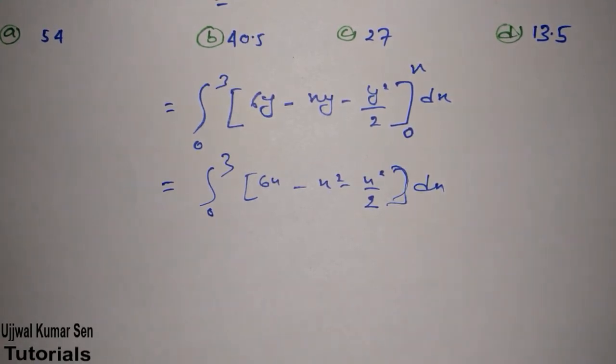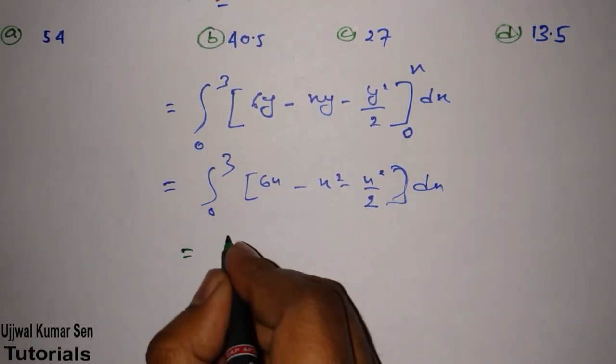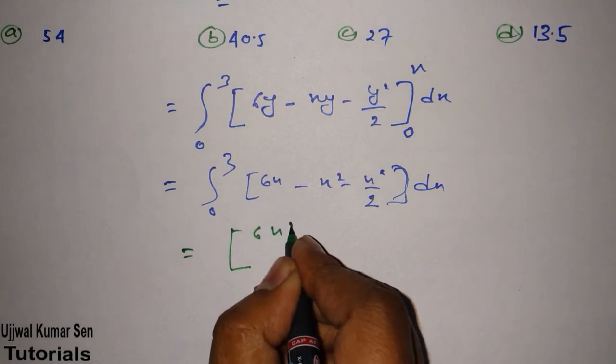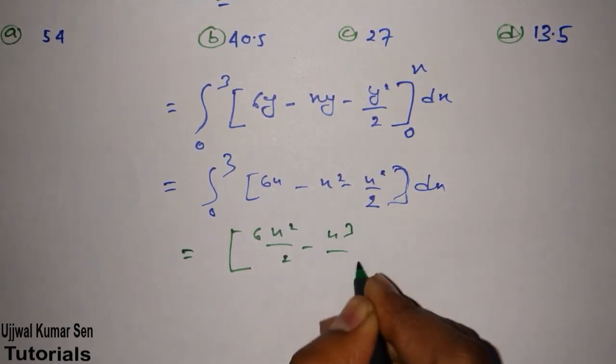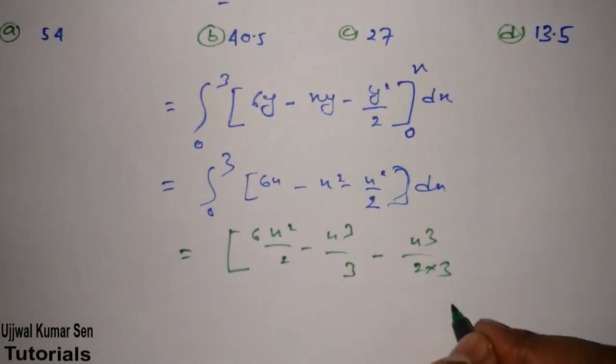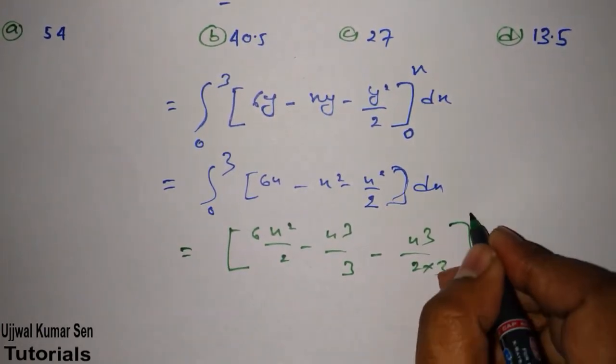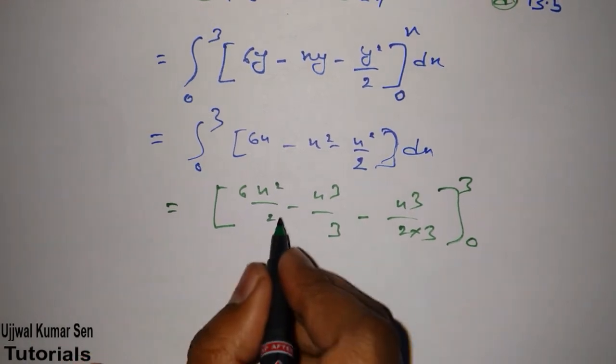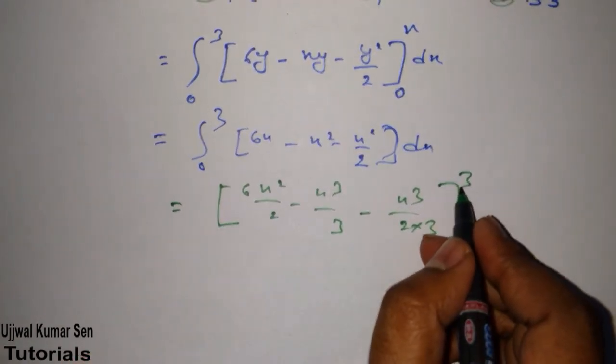So how we can do it? Just look at this: 6x square by 2, x cube by 3, x cube by 2 multiple 3 because 3 is here so we have to get denominator 3 also. So 0 to 3. Now do little bit calculation before going to put the value of x that is 3 and 0 right?